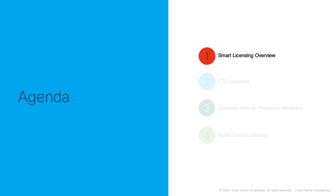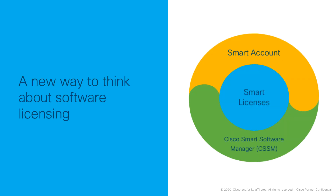Let's begin with an overview of smart licensing. Smart licensing from Cisco is a new way to think about software licensing. At the core is smart licensing itself, a flexible approach that streamlines the management of your software licenses. Then we have smart accounts. A smart account is used to create users and groups and organize licenses according to your particular business needs. And this is all done via the Cisco Smart Software Manager, or CSSM.